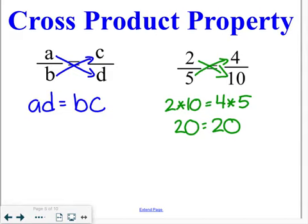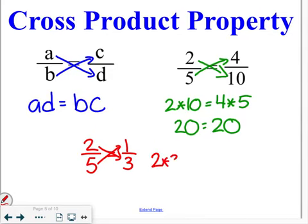If I set it up, for example, with something that's not equal. So, 2 fifths, we know is not equal to 1 third. If I checked the cross product on that, I would end up with 2 times 3 is equal to 5 times 1. 6 is not equal to 5. So, these two are not actually equal, which is something that we know is true.